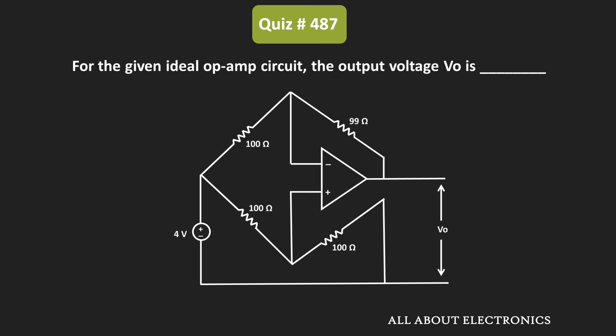Hey friends, welcome to the YouTube channel All About Electronics. So in this question, we have been given this op-amp based circuit and we have been asked to find the output voltage of the given circuit. We have also been given that the given op-amp is the ideal op-amp.